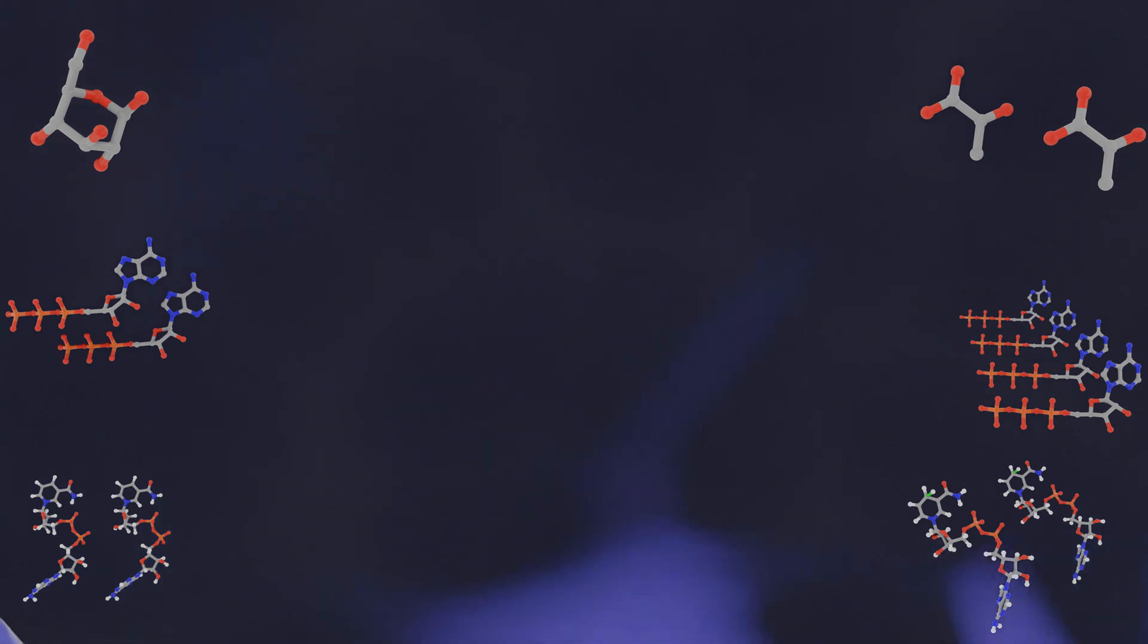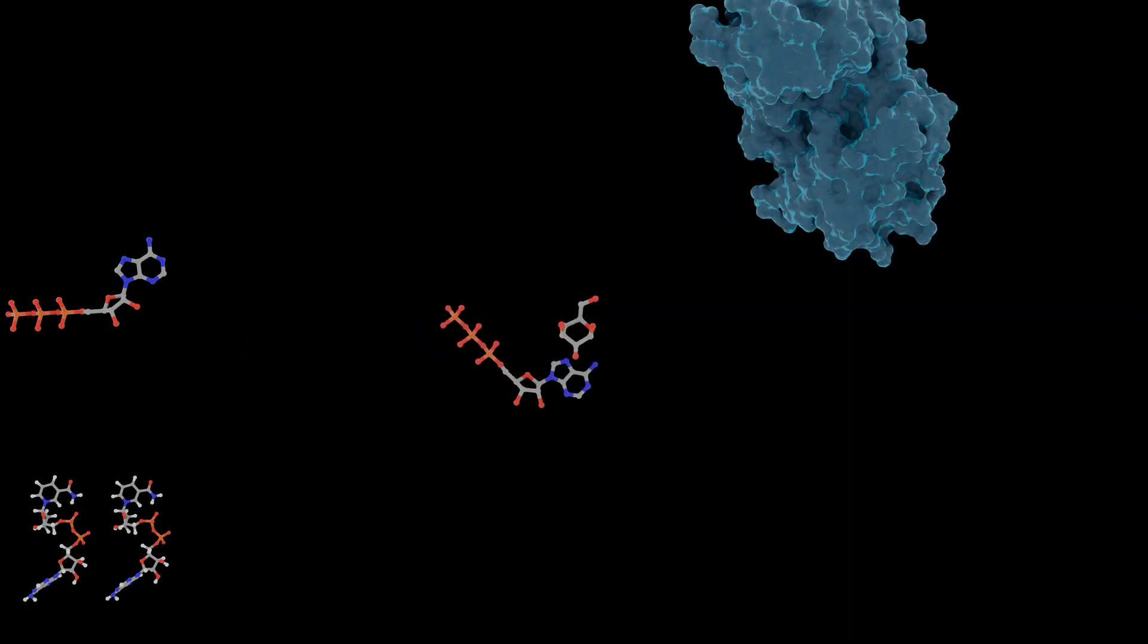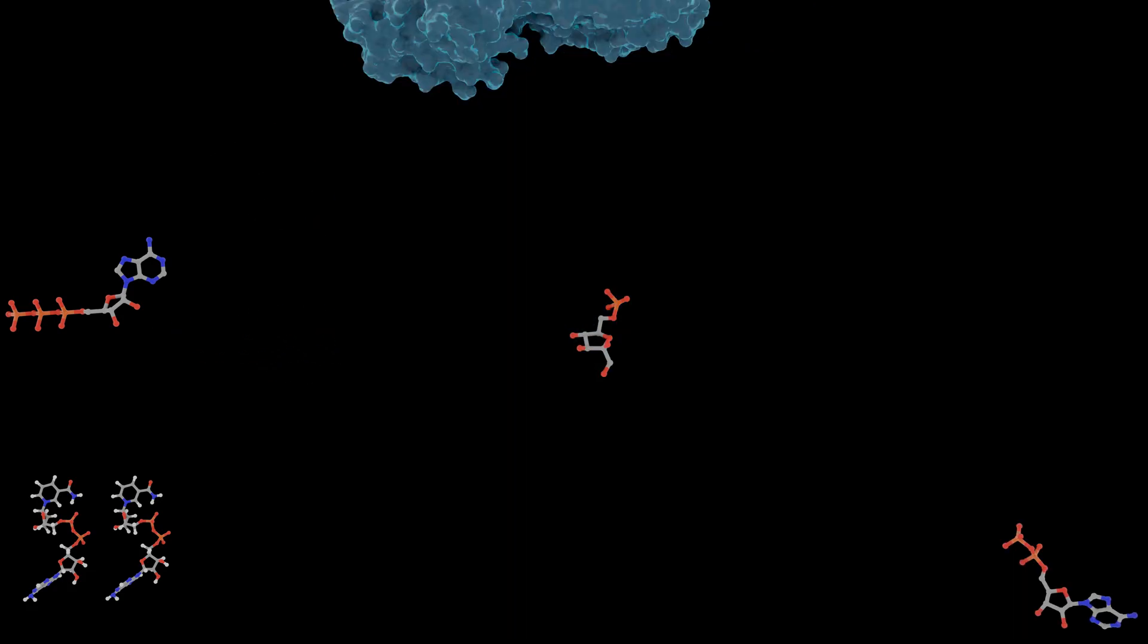So that does it for the beginner episode of glycolysis. In the next episode, we're going to take a look at the pyruvates that are going into pyruvate oxidation and the Krebs cycle. And then finally, we will finish the entire cellular respiration pathway with the electron transport chain.